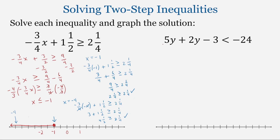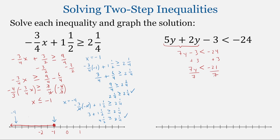With this last problem, as we have seen previously when solving equations and inequalities, the first step is to simplify down each side independently before trying to solve it. In this case, we have 5y plus 2y, and these are like terms, so this becomes 7y minus 3 less than negative 24. Now both sides are simplified. We'll add 3 to both sides to undo subtraction, giving 7y less than negative 21. Then divide both sides by 7 to get rid of that multiplication, giving y less than negative 3.